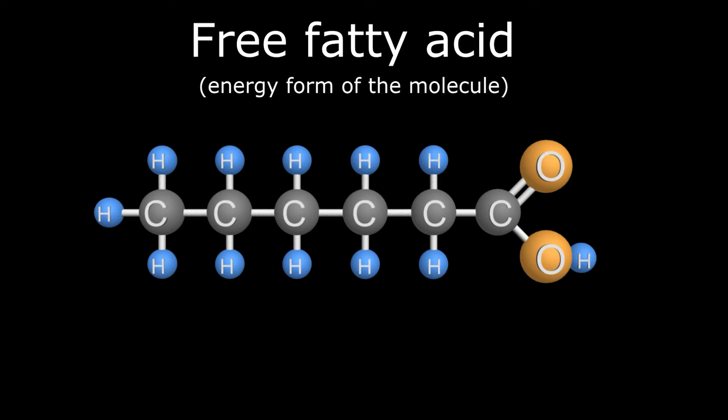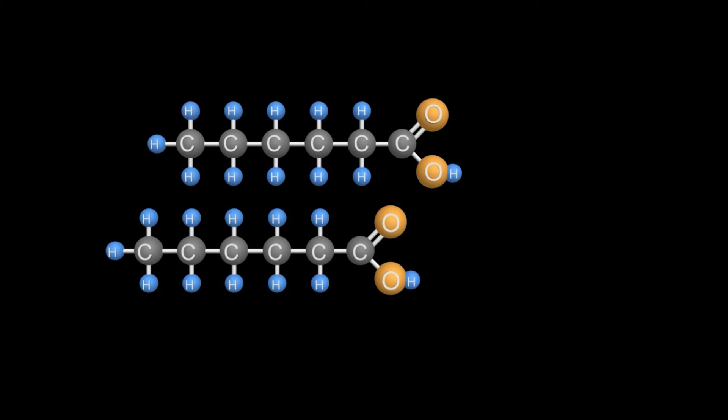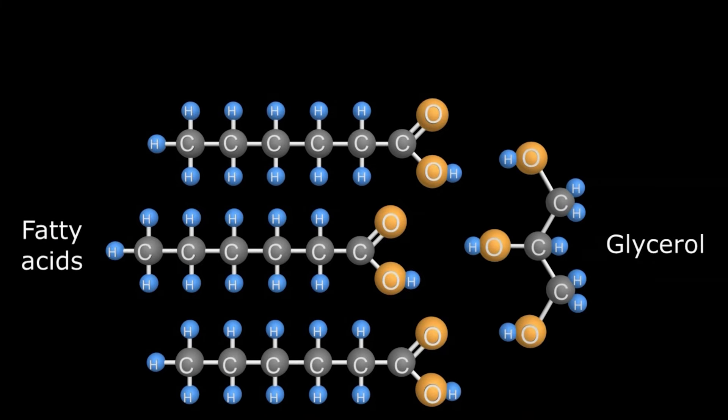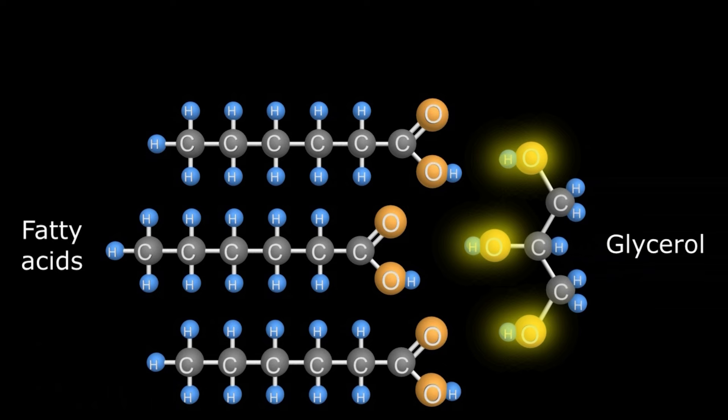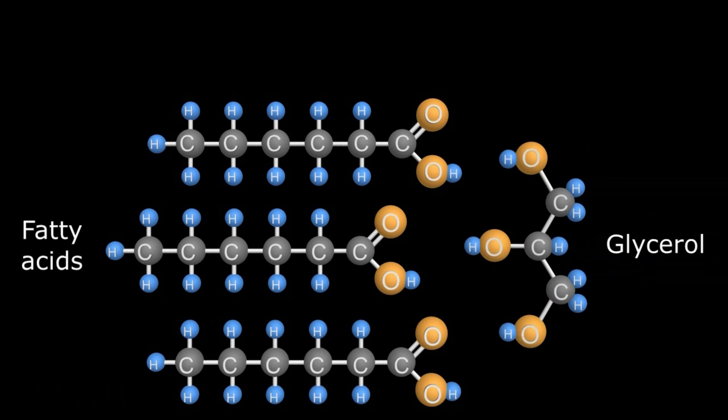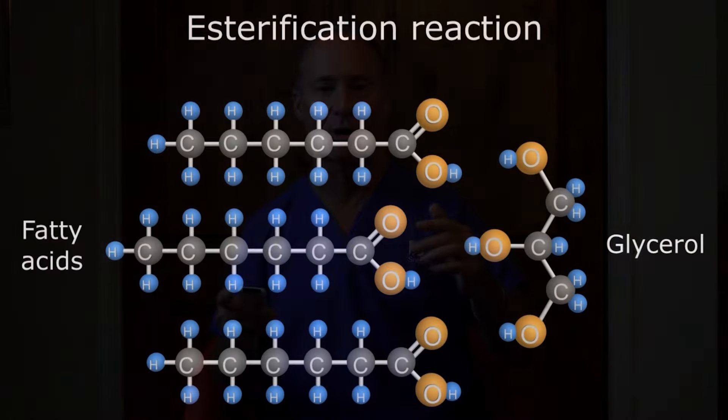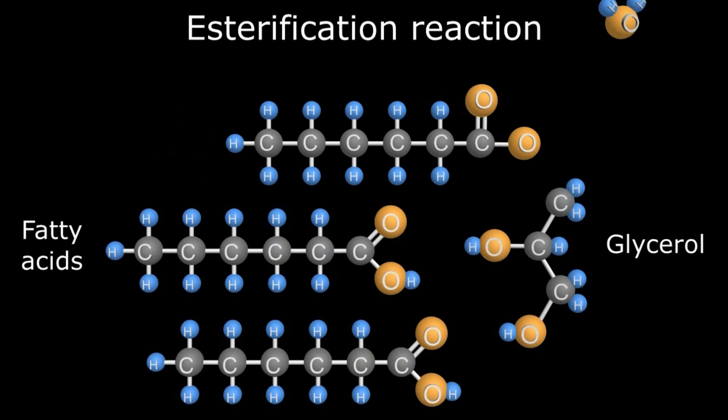Looking at the free fatty acid — this is the energy form of that molecule. When we're storing fat in our body, it's not as a free fatty acid; it's usually as a triglyceride. A triglyceride consists of three fatty acid molecules attached to an alcohol called glycerol. Glycerol is a three-carbon backbone with hydroxyl groups hanging off of it. When you combine the glycerol with the three fatty acids, that's called an esterification reaction — anytime you put an acid with an alcohol. Each time one of these acids joins with the alcohol, it produces a water molecule. So with triglycerides, because there are three fatty acids, you produce three water molecules when you make a complete triglyceride.